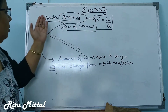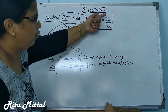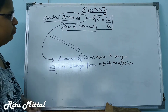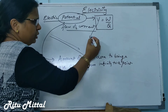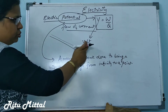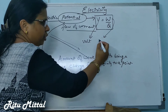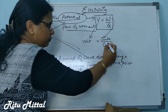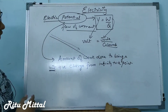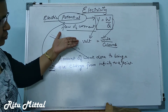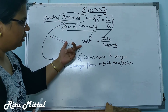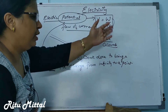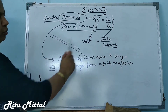V is measured in volts, work done is measured in joules, and q is in coulombs. One volt is defined as the potential when the work done is one joule to bring one coulomb of charge from infinity to a point. That is the definition of one volt.